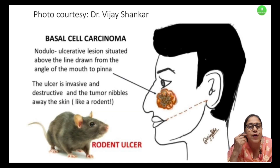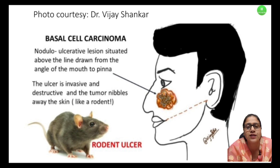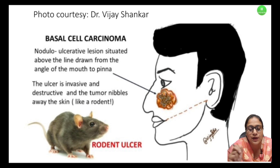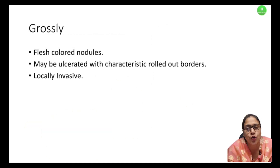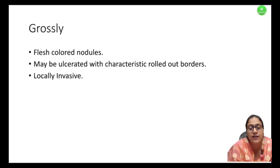A line that connects the angle of the mouth to the pinna — we get to see basal cell carcinoma on the top of it. Rodent ulcer means that it literally nibbles the skin. Grossly, flesh-colored nodules can be ulcerated with a characteristic rolled-out border.